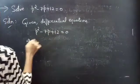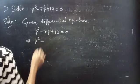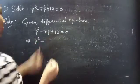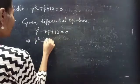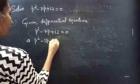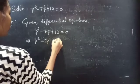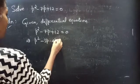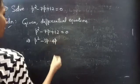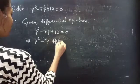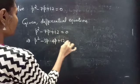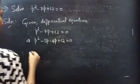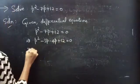Then, P squared minus — split this minus 7P as minus 3P and minus 4P. The third term will be as it is, plus 12 equals to 0.